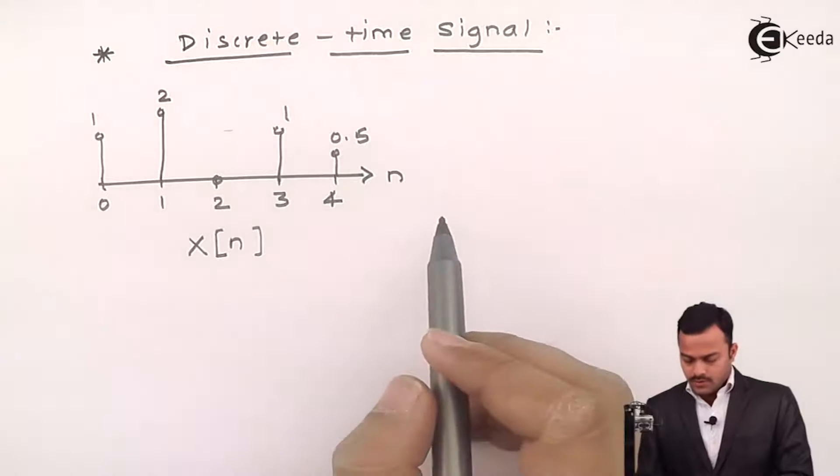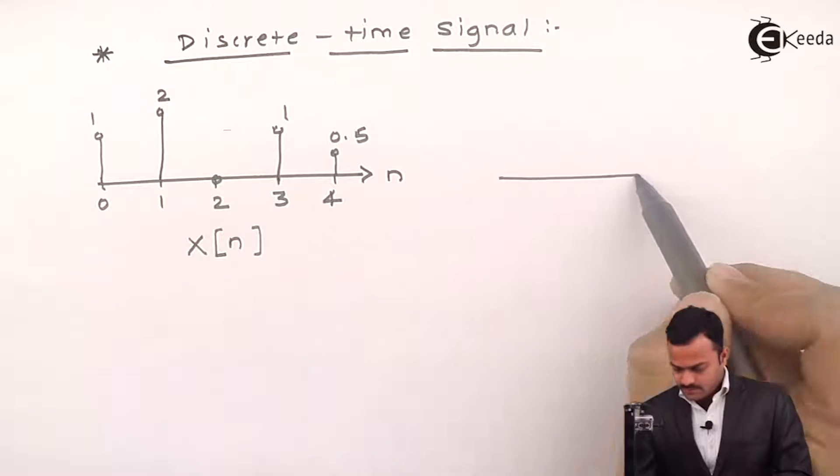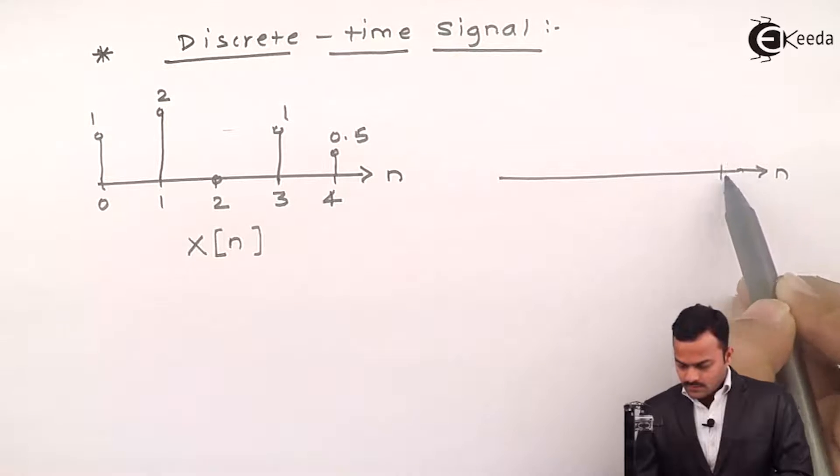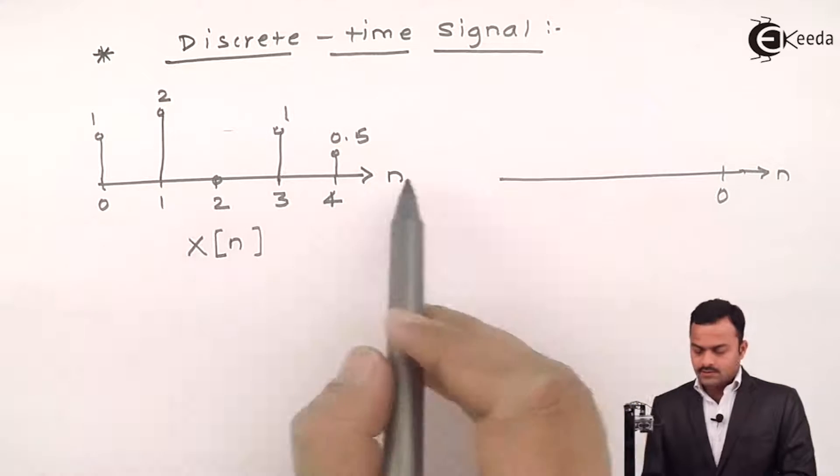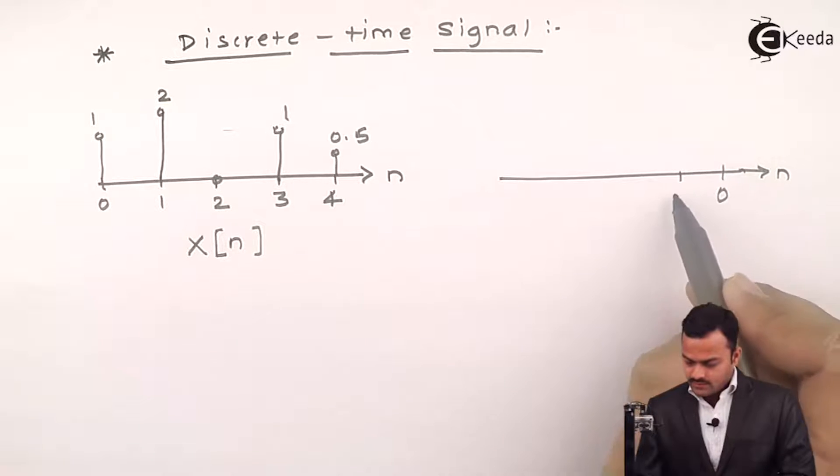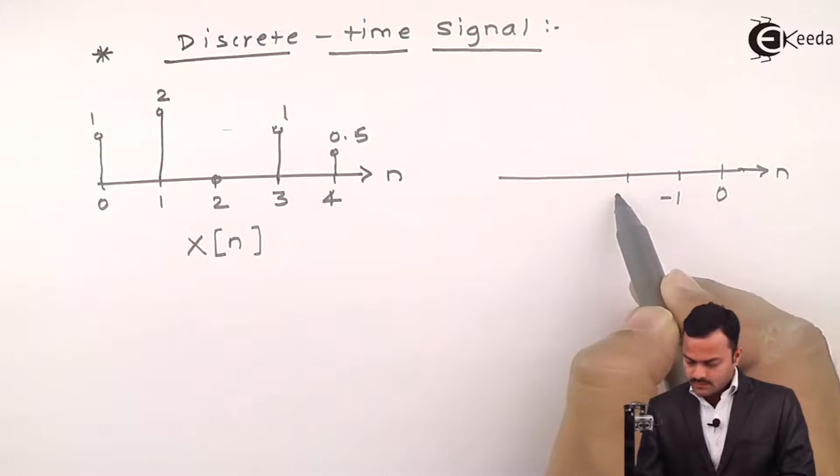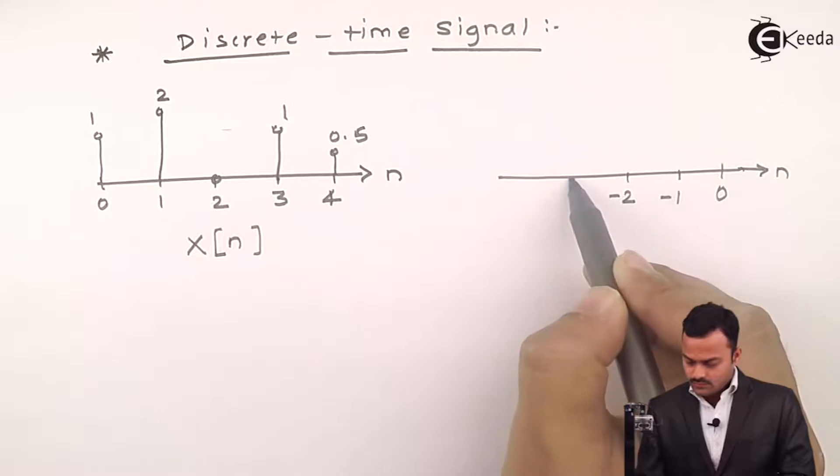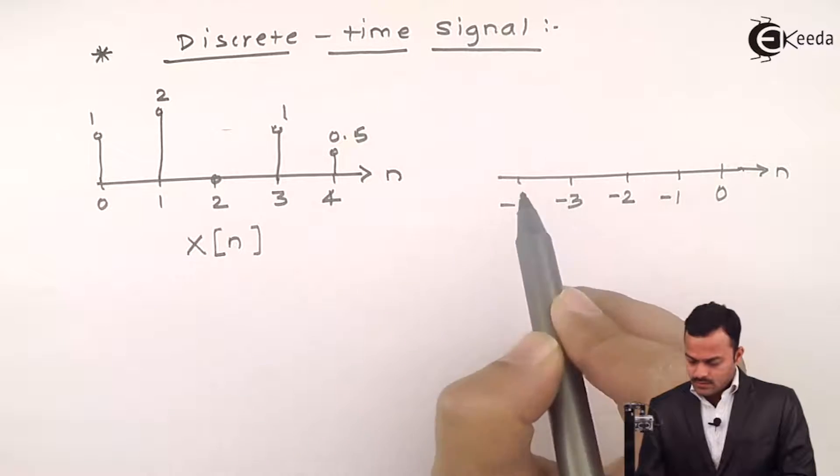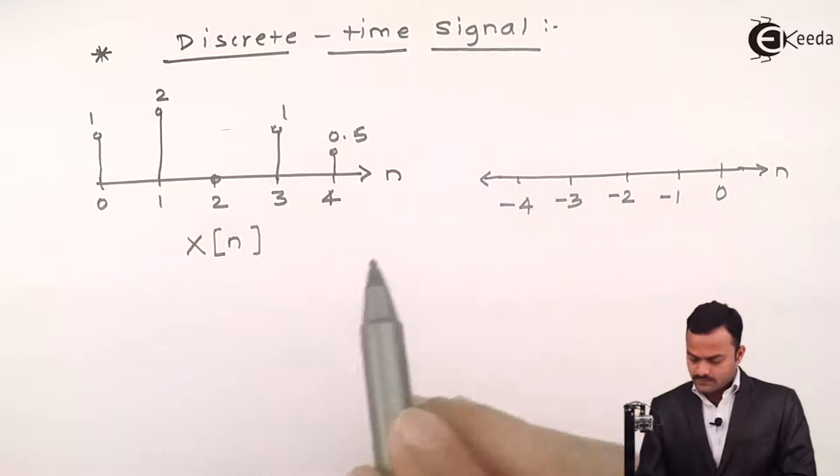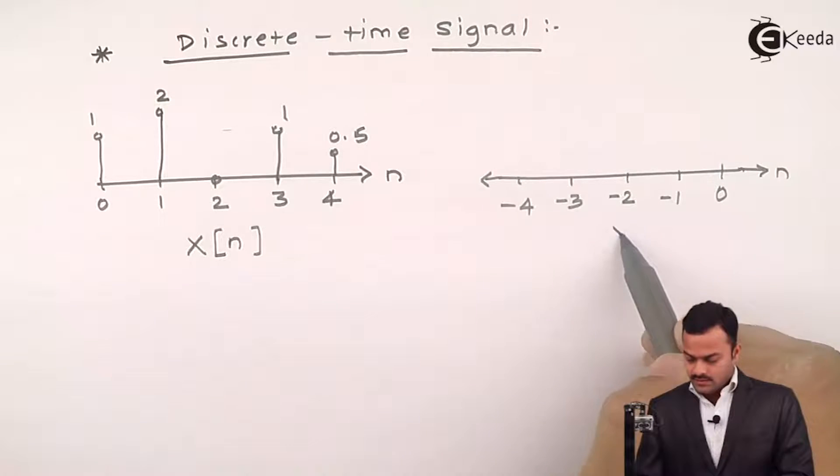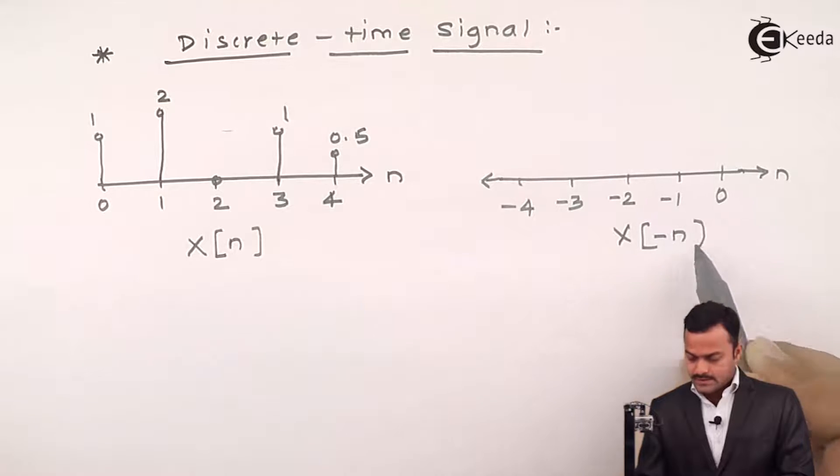We can do a time reversal to this so it becomes like this. The axis will be from 0 minus 1 minus 2 minus 3 and minus 4. So what we can say over here in a time reversal the new sequence that we obtained is X of minus n.